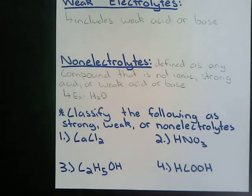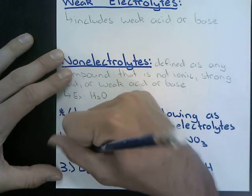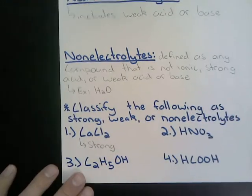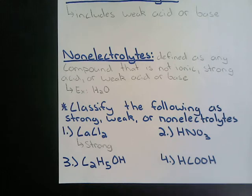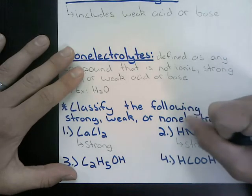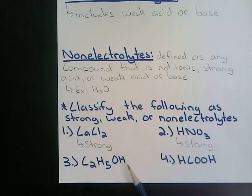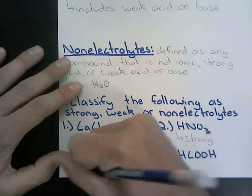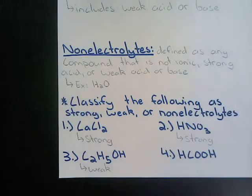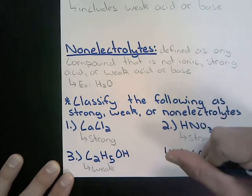Calcium chloride is ionic, so it is a strong electrolyte. Nitric acid is a molecular compound, but it's one of the seven strong acids — so it's also a strong electrolyte. Ethanol has an H that can be donated, but it's not one of those seven strong acids, so it's considered a weak acid and therefore a weak electrolyte. Acetic acid similarly has an H out in front that can be donated, so we classify that as a weak electrolyte too.